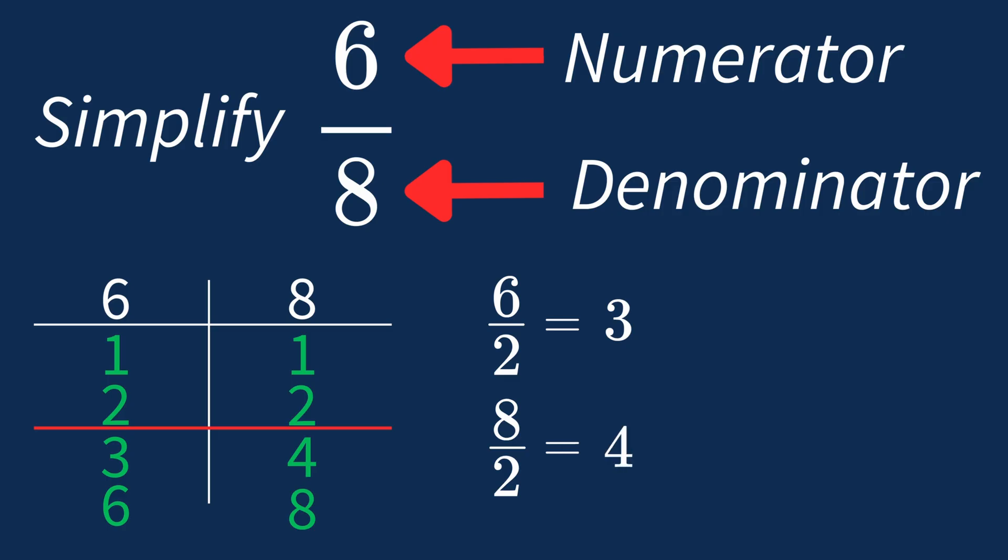So after dividing both parts by the common factor of 2, we're left with the fraction 3 over 4. So we've successfully simplified 6 over 8 to 3 over 4.